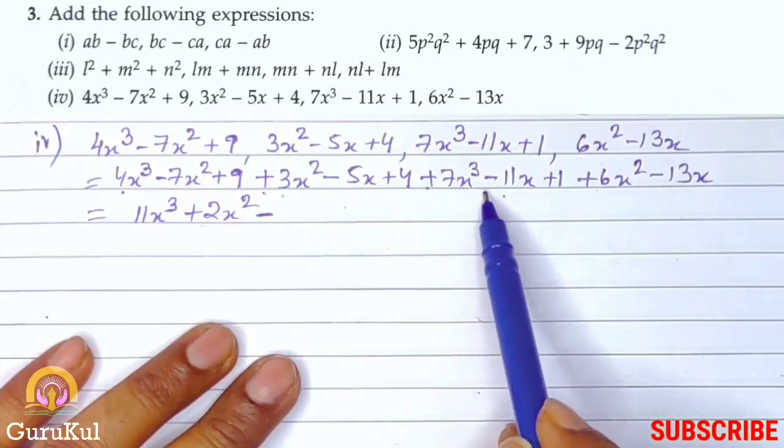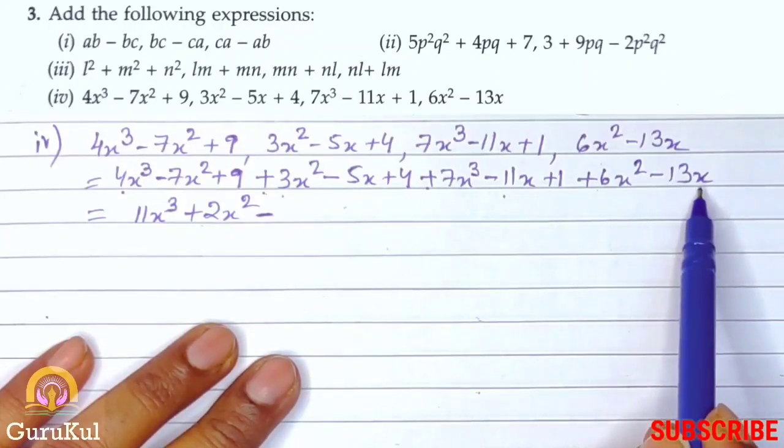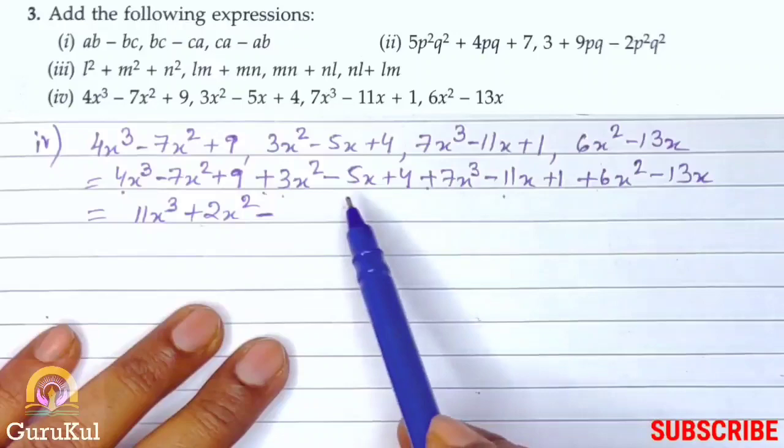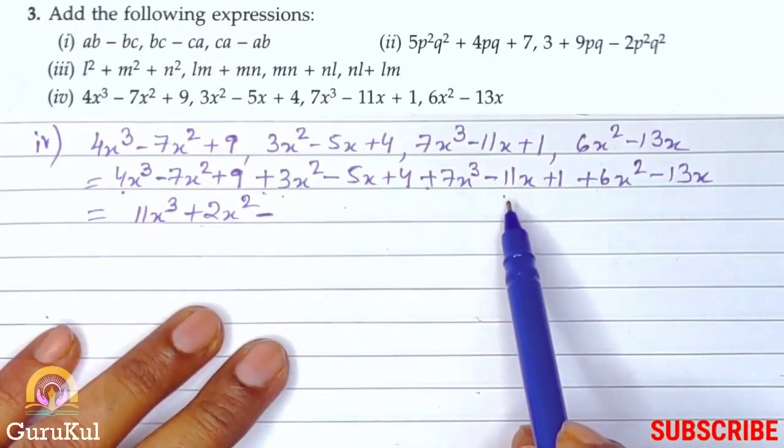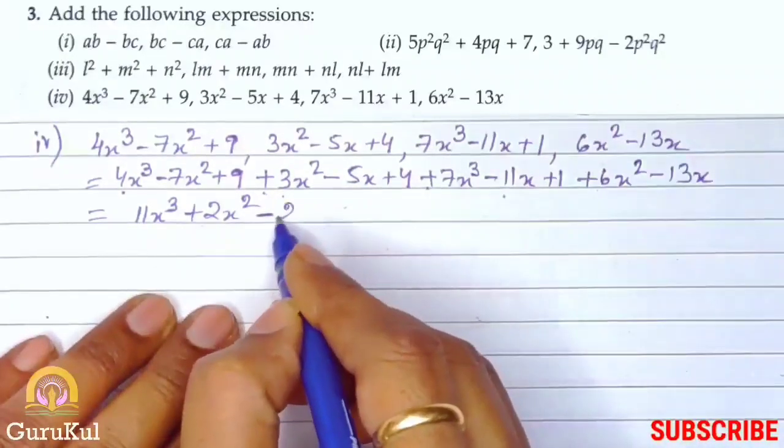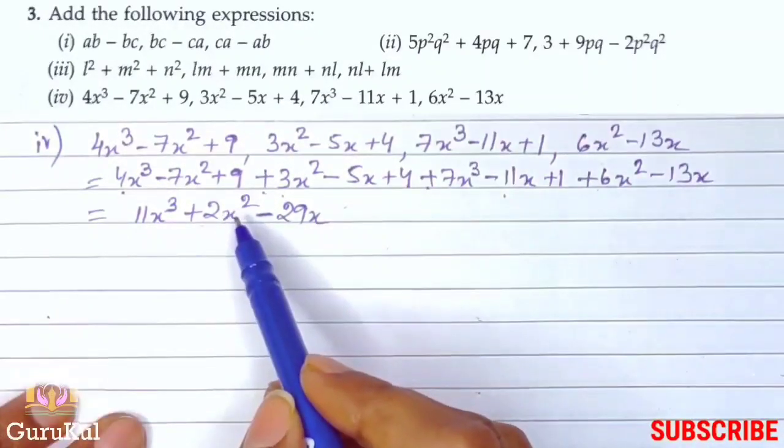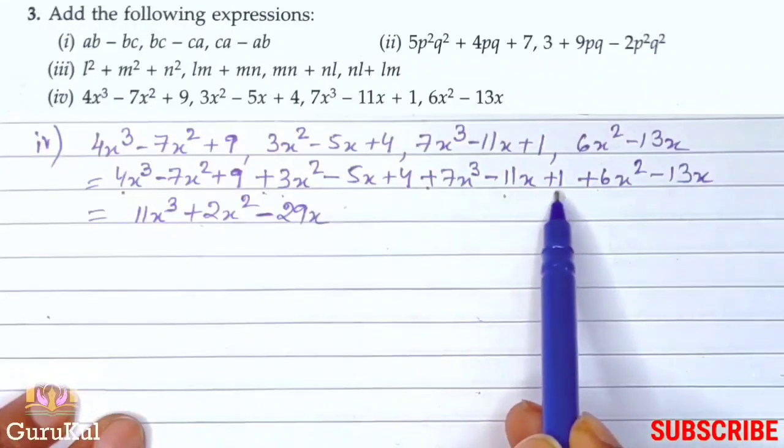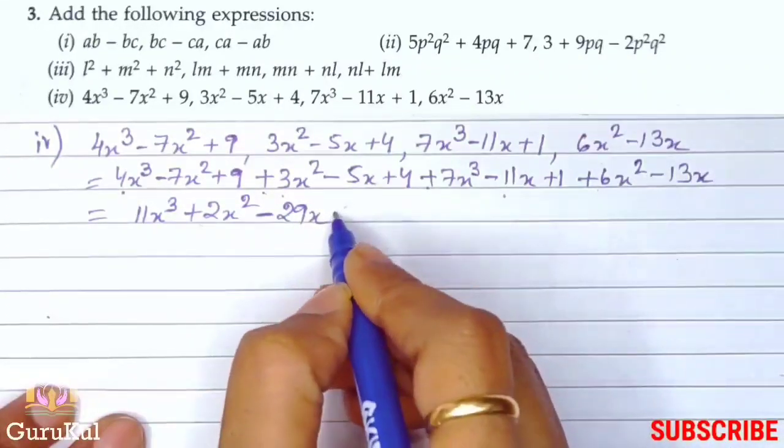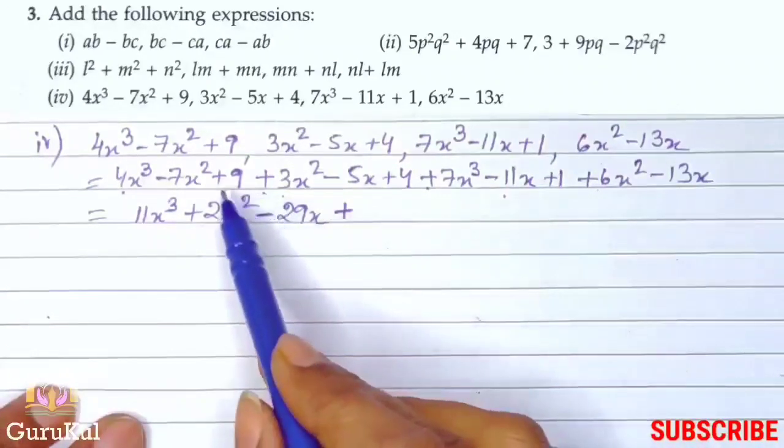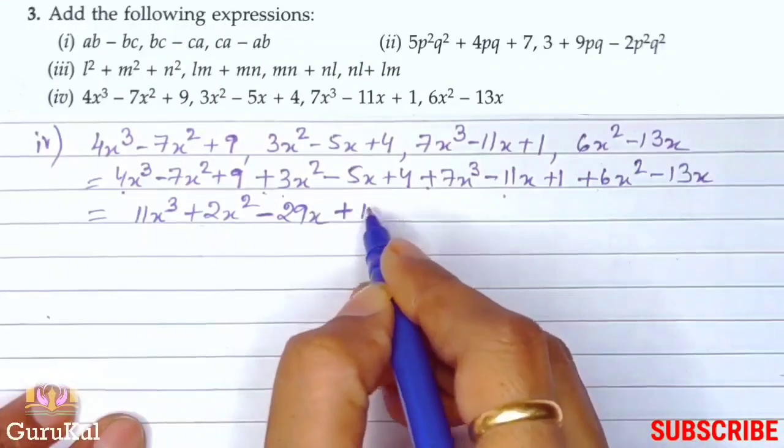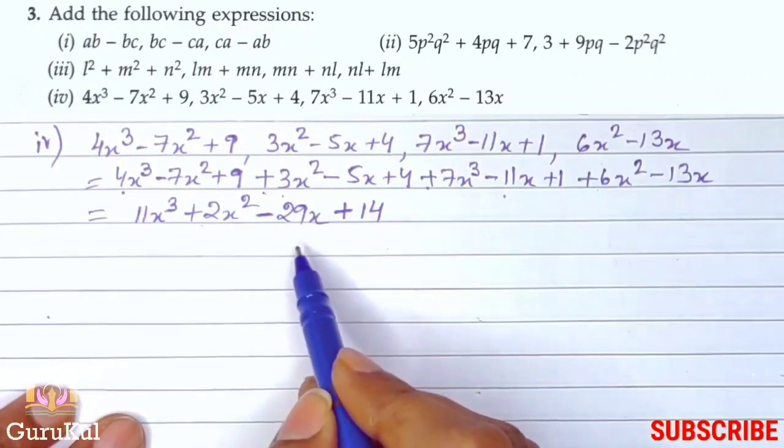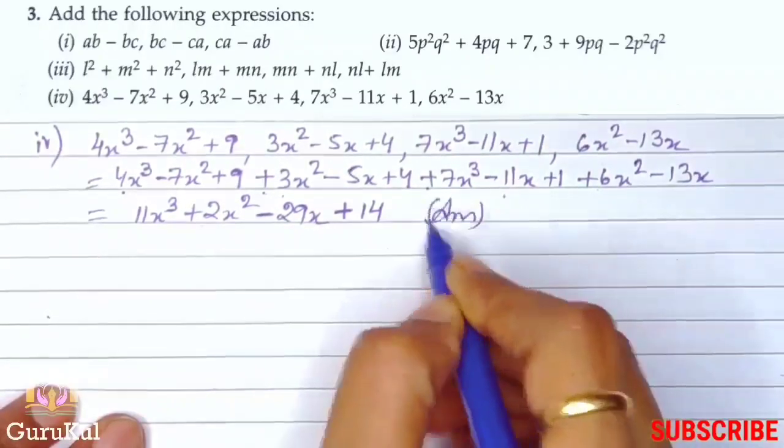So here it is minus 5X minus 11X and minus 13X. So, all three are negative. So, answer will be negative. But, we are going to add them. So, 5 plus 11 gives us 16. 16 plus 13 gives us 29X. Now, we are going to solve the numbers which are left behind. Plus 9 plus 4 and plus 1. So, three are positive. So, our sign becomes positive. So, 9 plus 1 is 10. 10 plus 4 is 14. So, 11X cube plus 2X square minus 29X plus 14 is the answer.